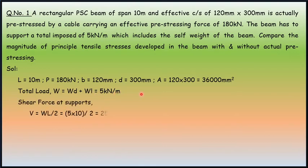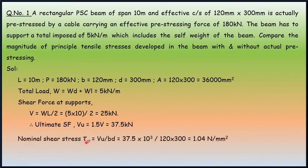Shear force at supports V equals WL by 2. Substituting the values, shear force at supports becomes 25 kN. Therefore ultimate shear force Vu equals 1.5V which is 37.5 kN. Nominal shear stress τv equals Vu by bd. After substituting the values of Vu by bd, we have the nominal shear stress as 1.04 N per mm square.